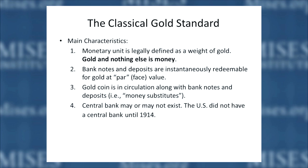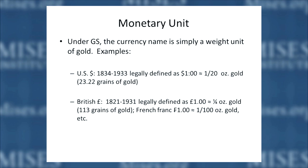A central bank may or may not exist — it did exist in most industrialized countries during the 19th century, but not in the U.S. The monetary unit under the gold standard is simply the name for a particular weight of gold. In the U.S., for 100 years from 1834 to 1933, the dollar was legally defined as approximately one-twentieth of an ounce of gold, or 23.22 grains. In Great Britain, for over a hundred years, the pound was defined as about a quarter of an ounce, roughly 113 grains. The French franc was about one-hundredth of an ounce. Pounds, dollars, and francs are just different names for different weights of gold — they are all gold money.